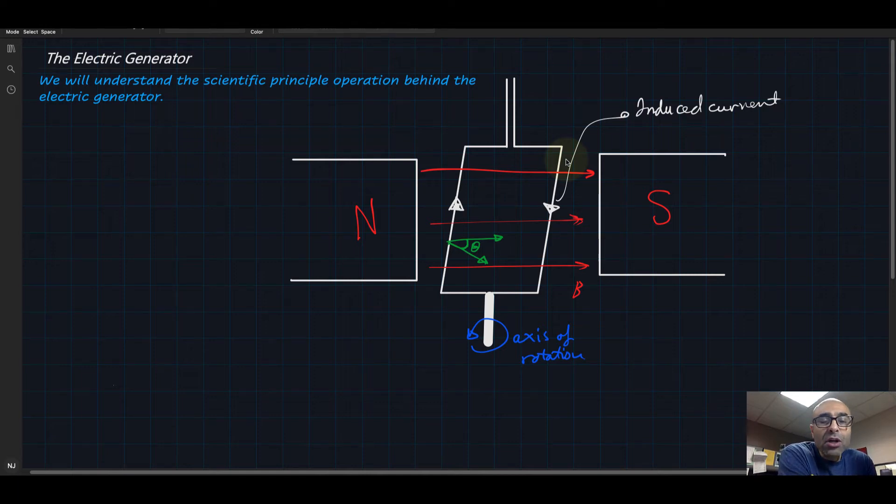Hey there everybody. We will talk about the electric generator and we will try to understand the scientific principle operation behind the electric generator. How do they work and how do they give us this endless amount of energy coming to us in the shape of electricity?